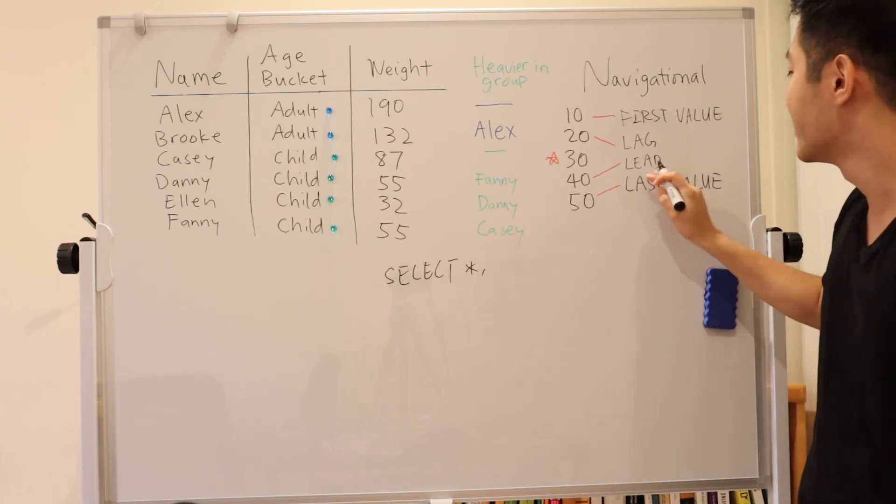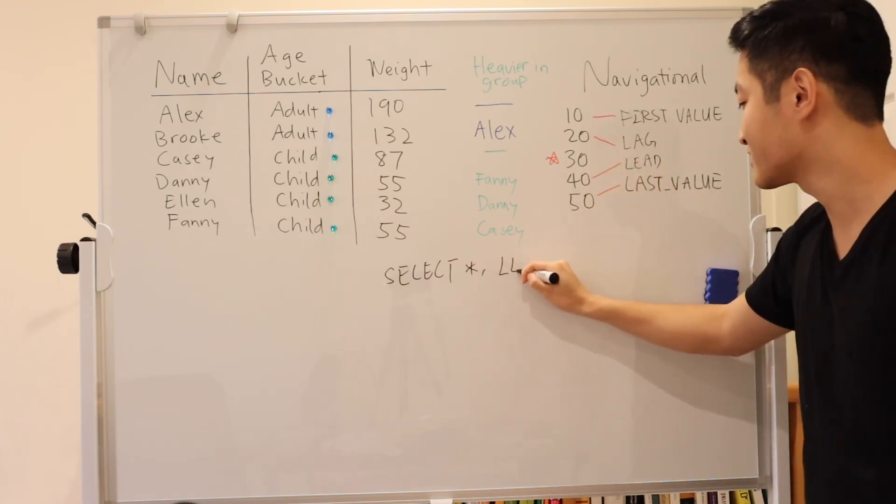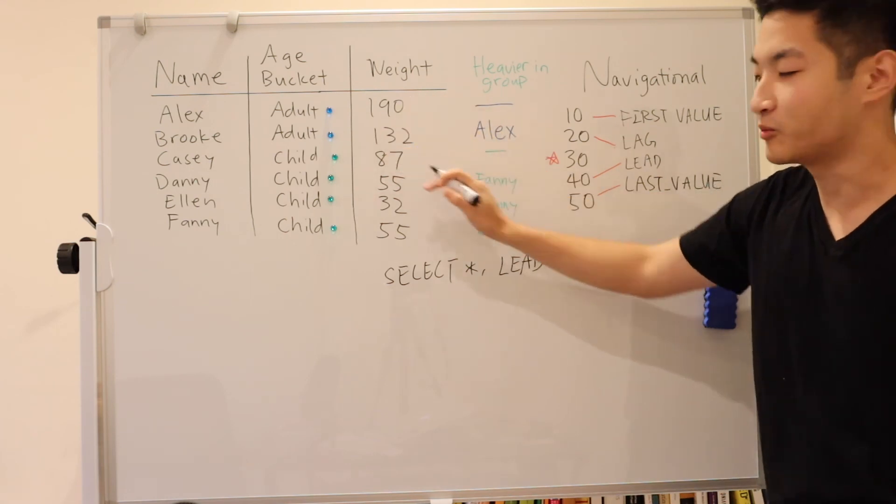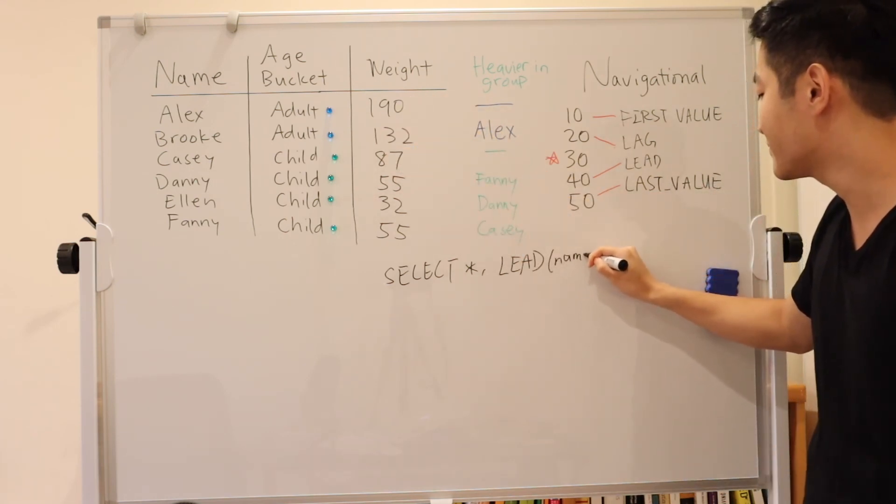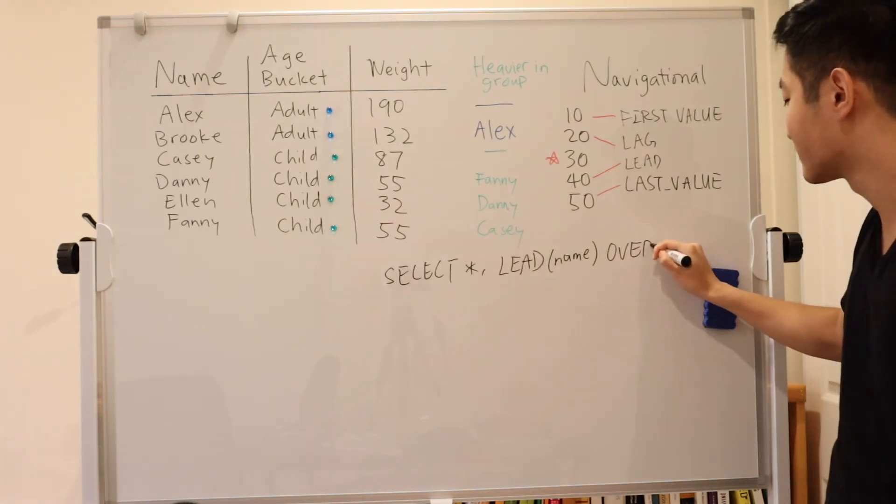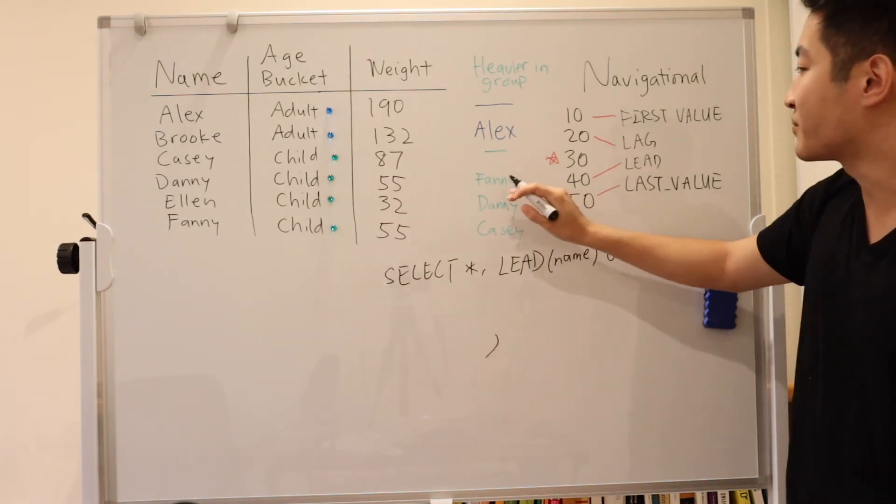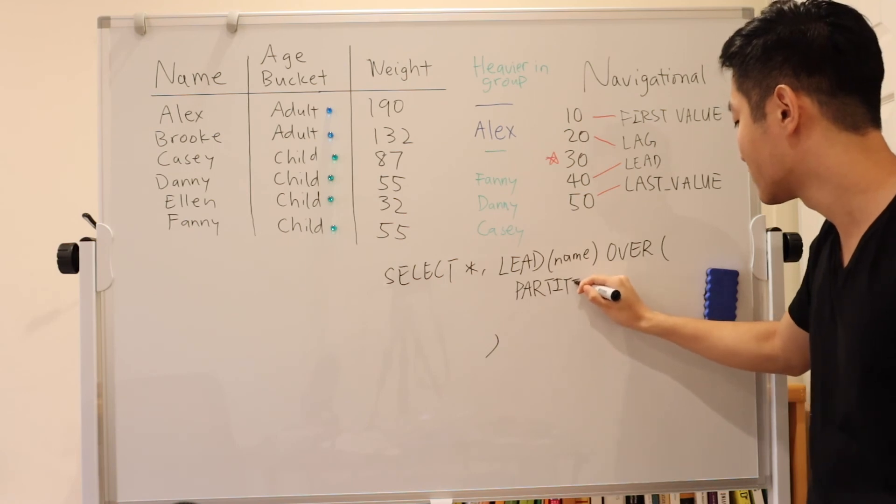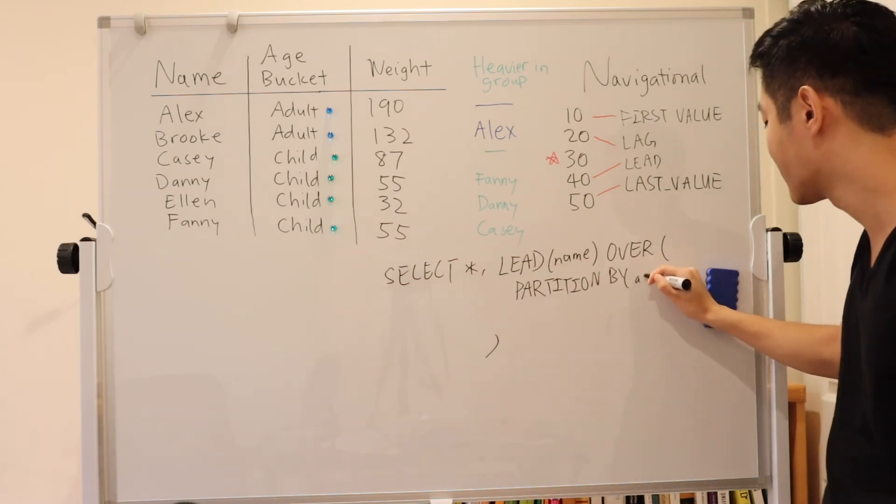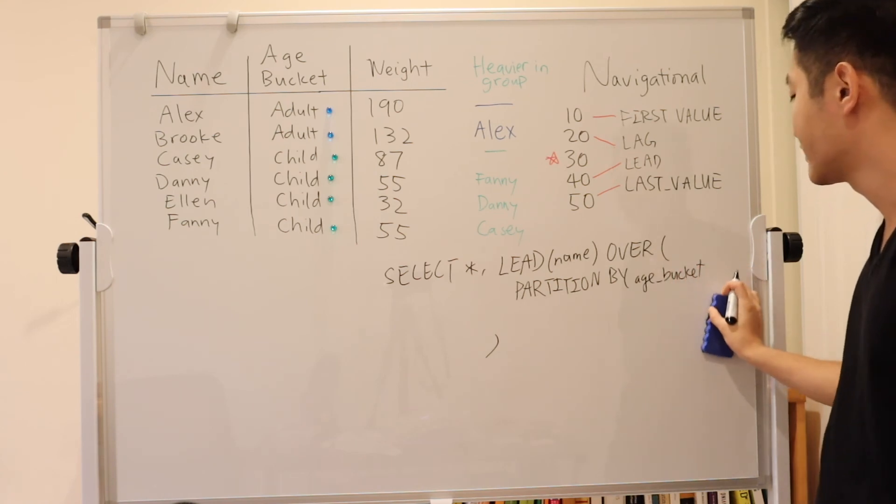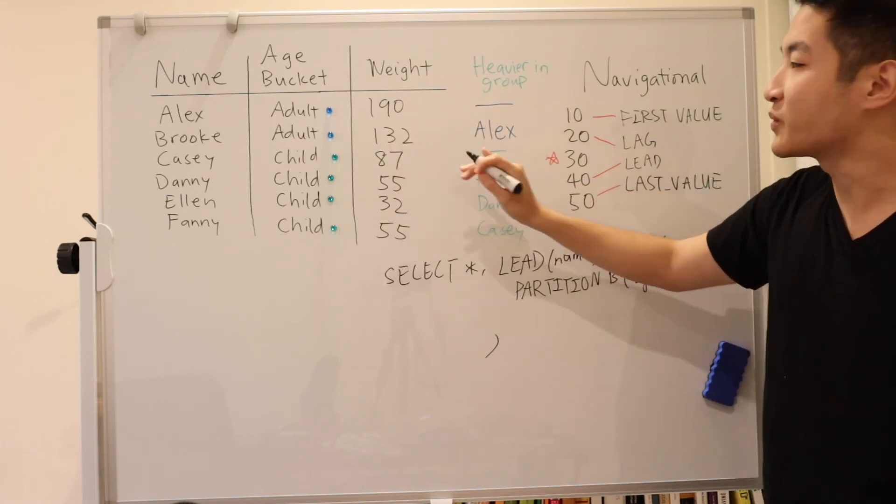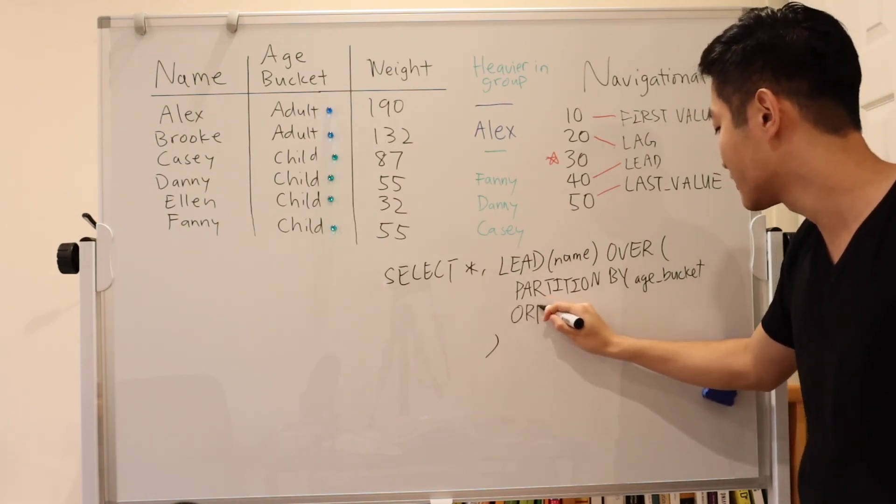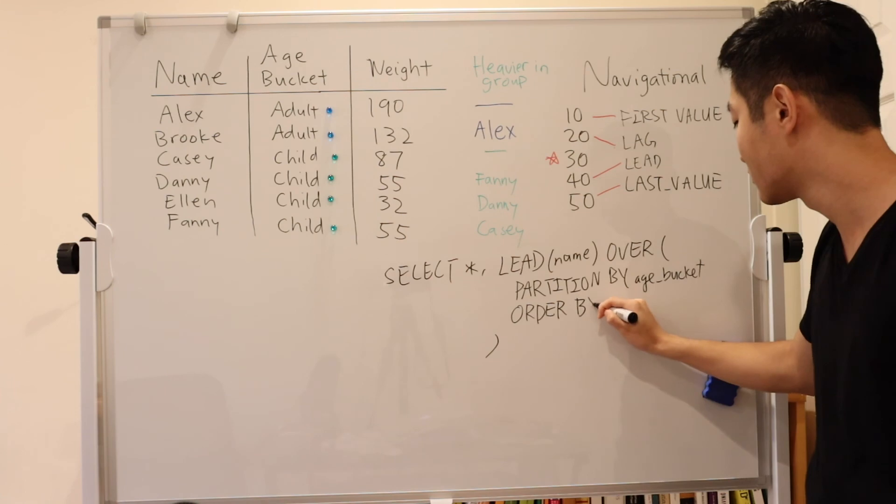For the analytic function, we're going to use lead here. Lead will give us the heavier person. So lead, and then what do we want from the following row? We want the name. We don't want the weight. So we say lead of name over, and now what is our partition? Our partition is using the age bucket column. Partition by age bucket. And then after that, we can't just partition. We have to order, right? Because we want the heavier person to be in the lead. So then we need to order by weight.